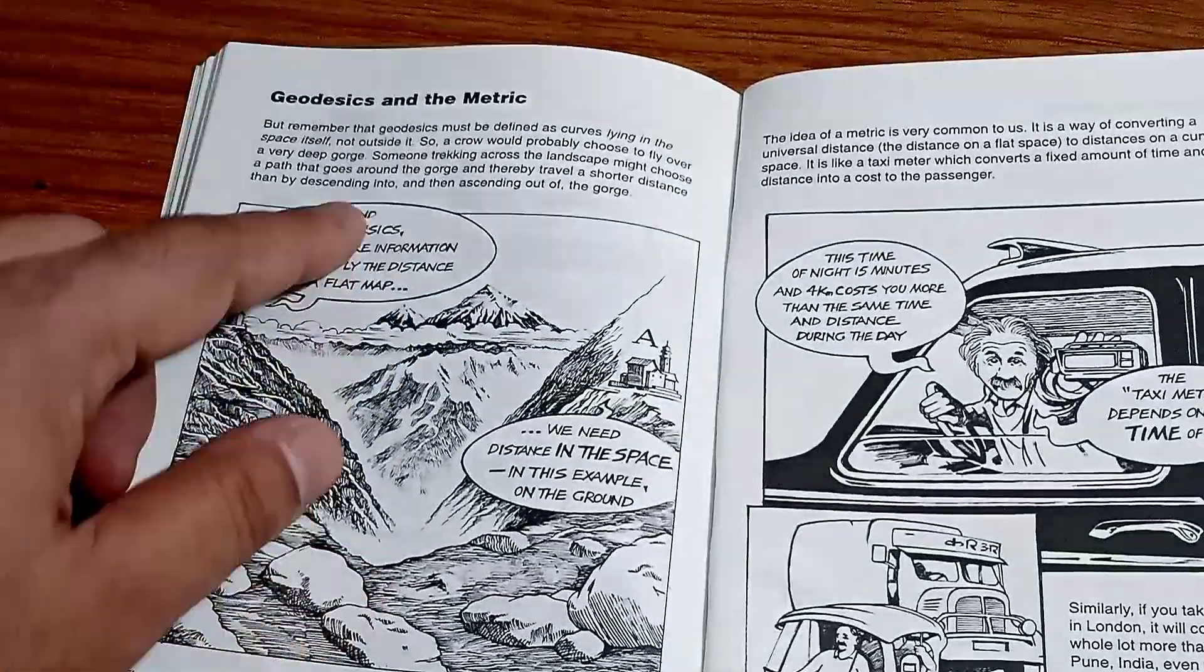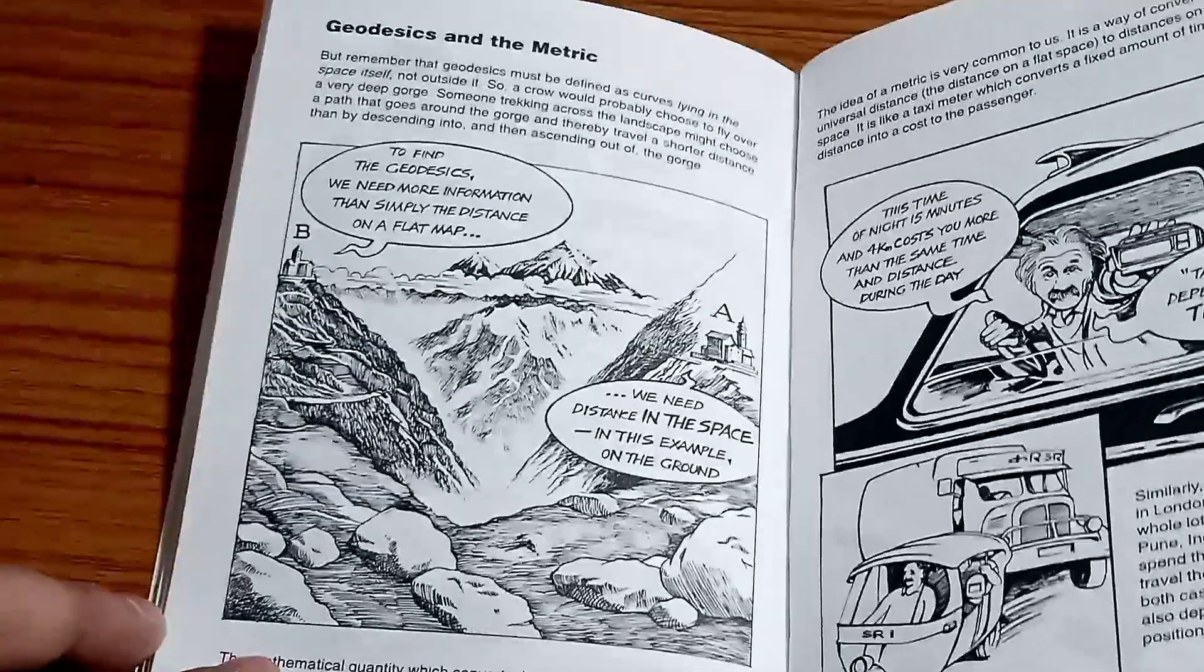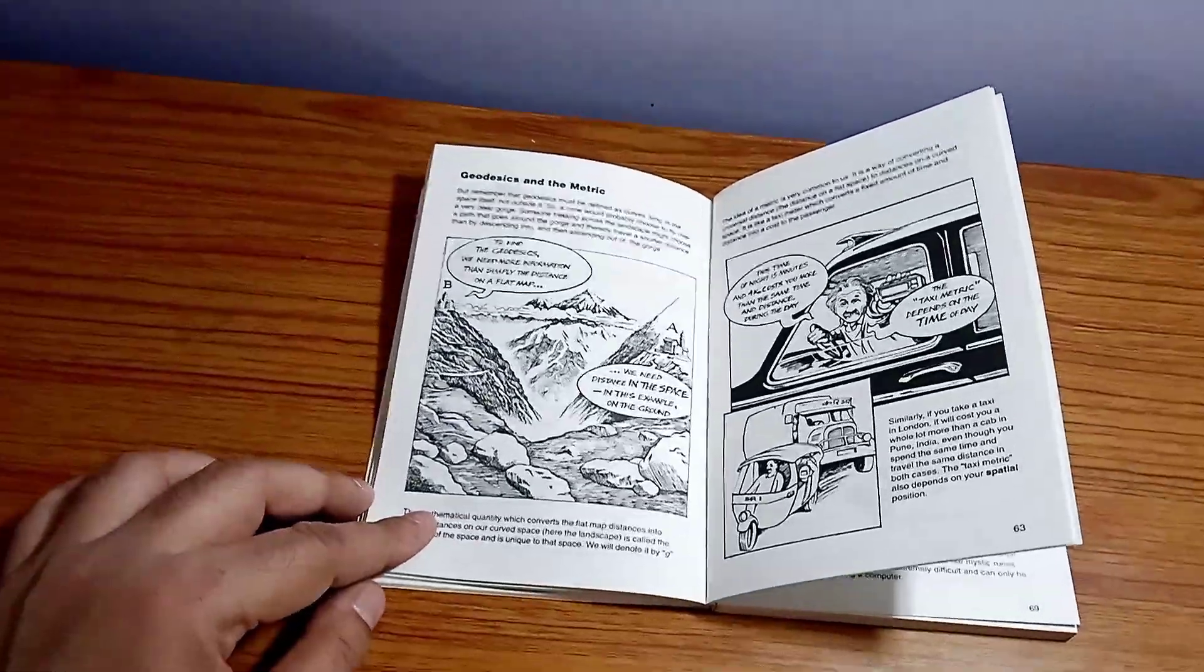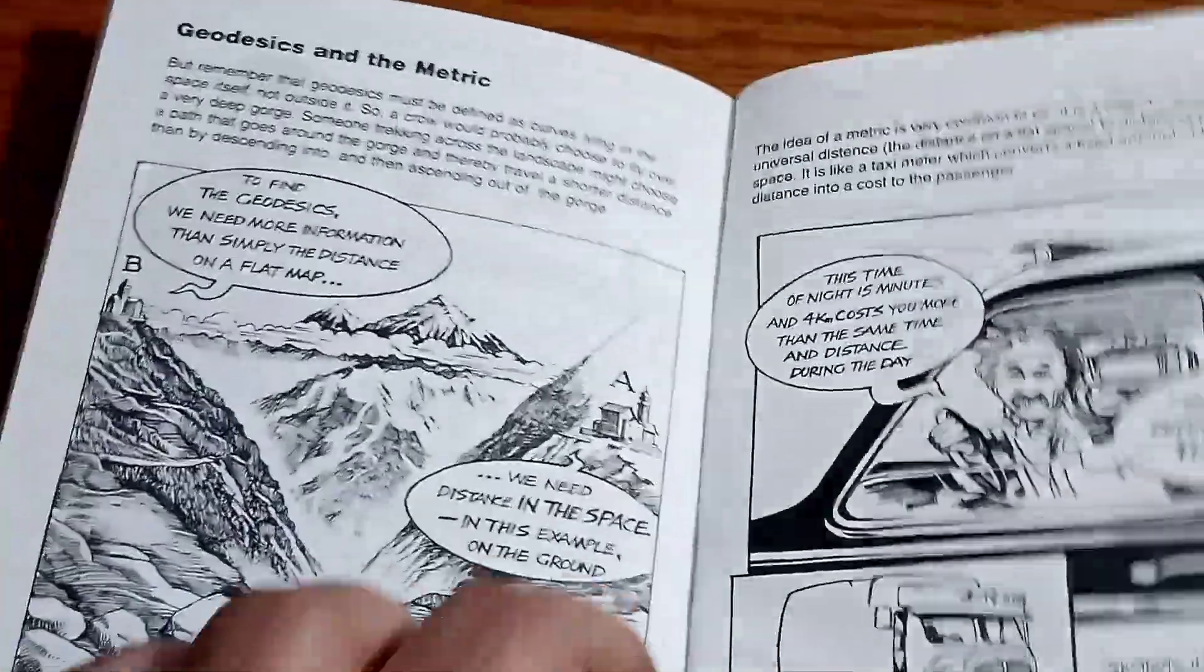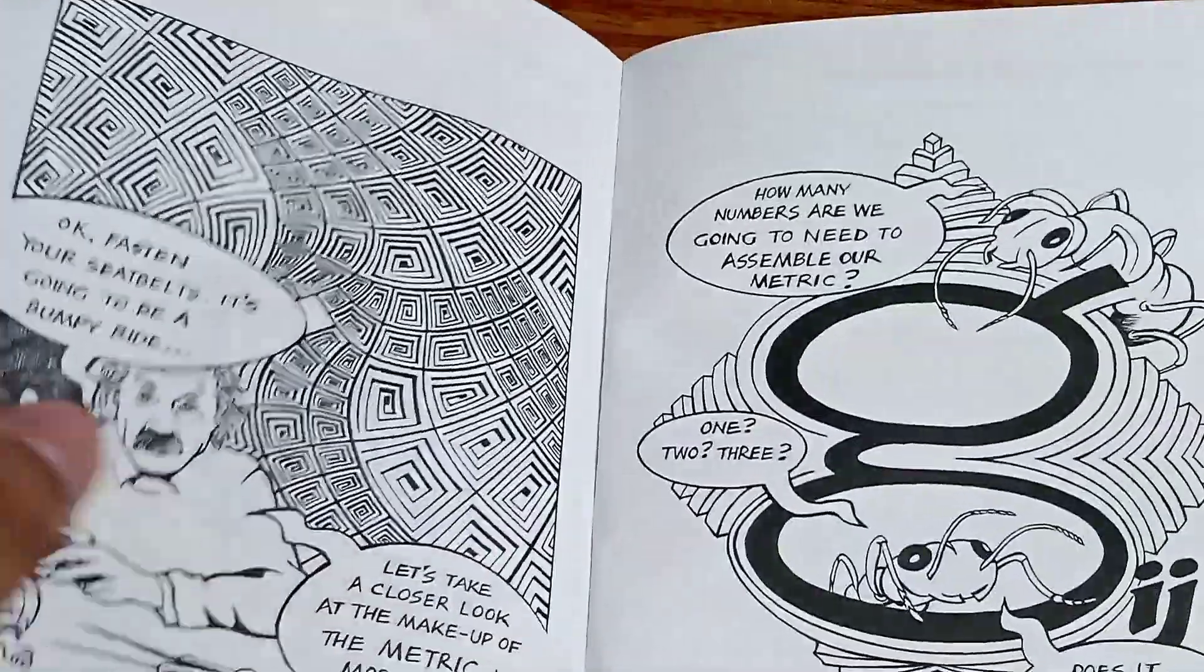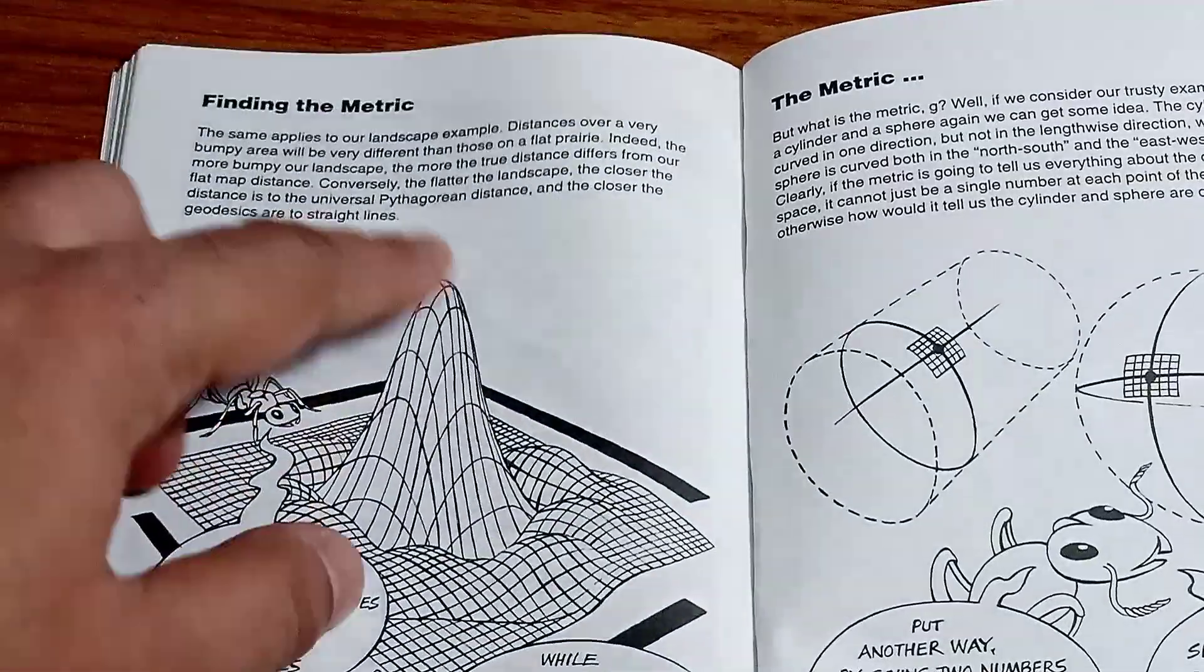So the geodesics and the metric are being covered. And most importantly, this is a nice depiction of the concept of geodesics, really. And you can have a look onto how it looks like, the geodesics and the metric. So you see, this is the bumpy space.